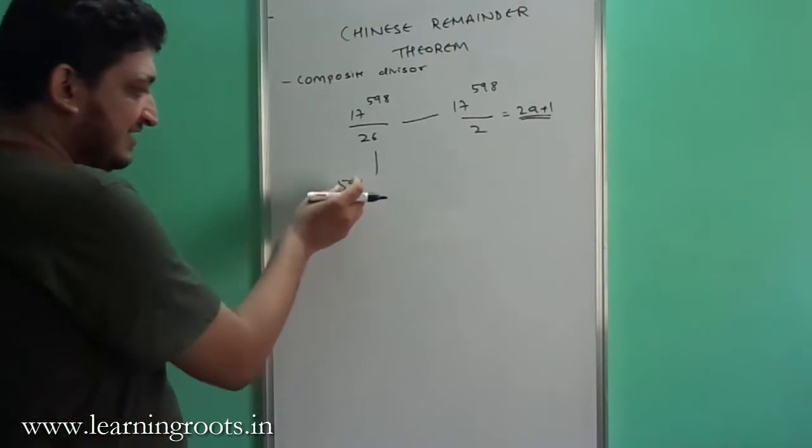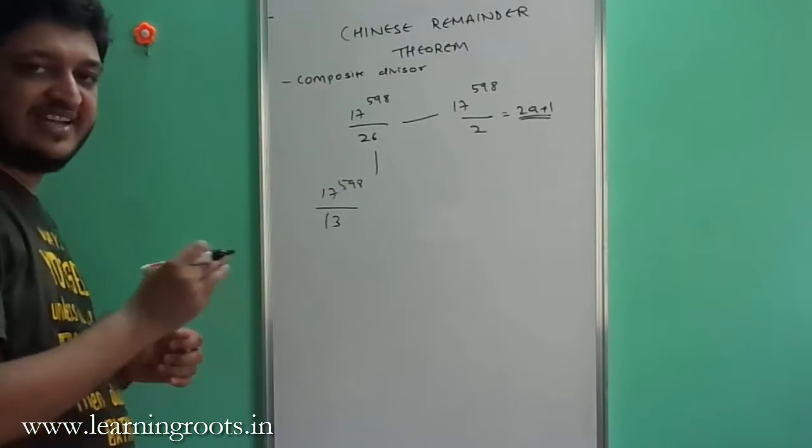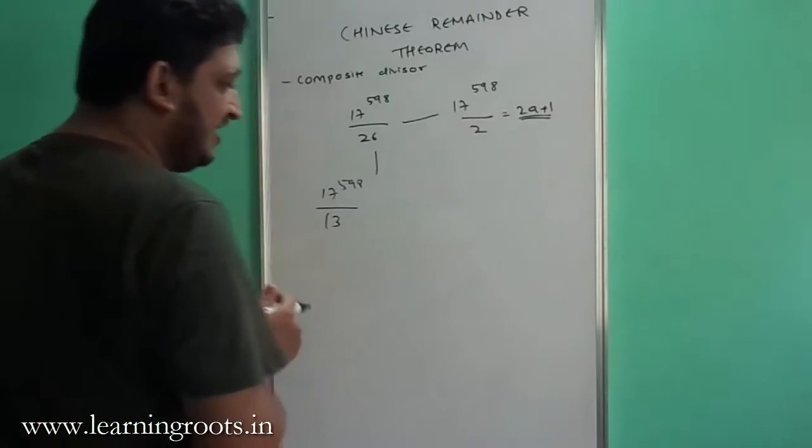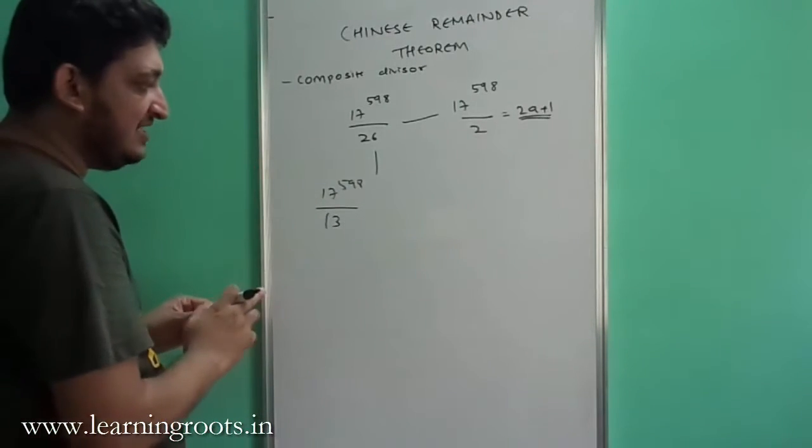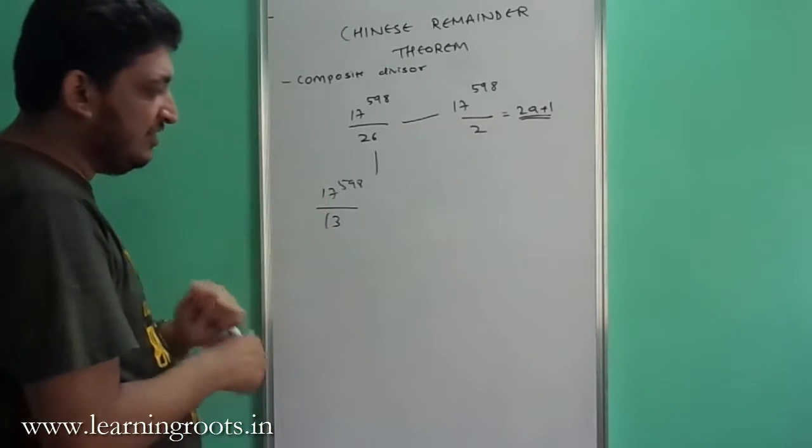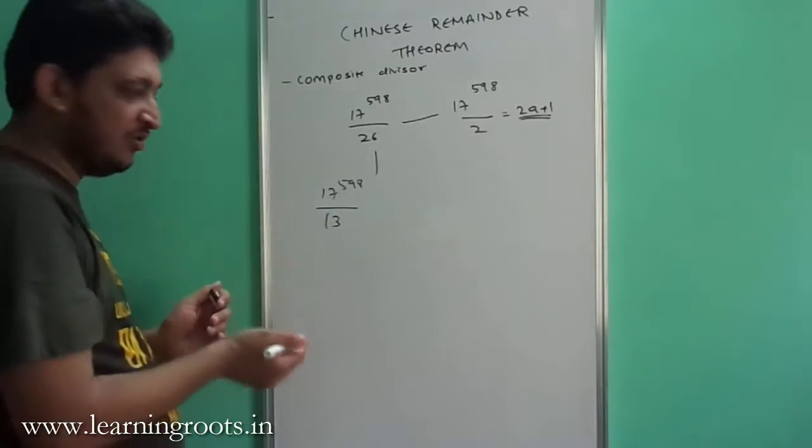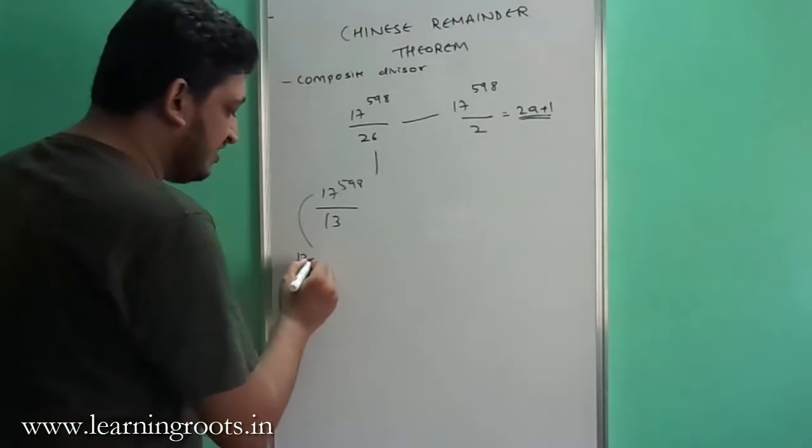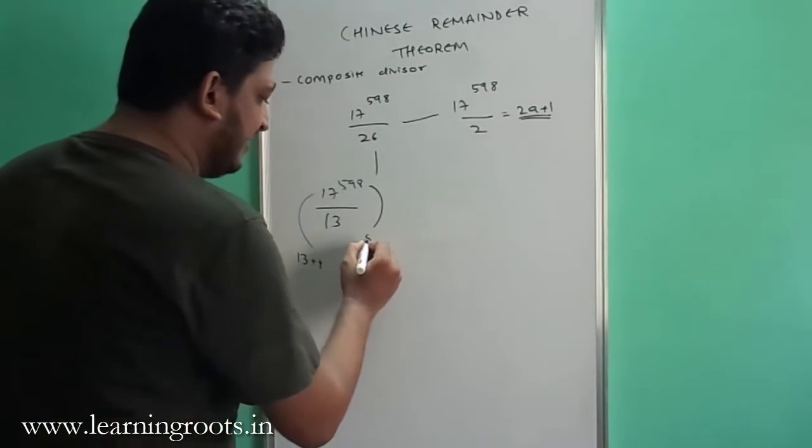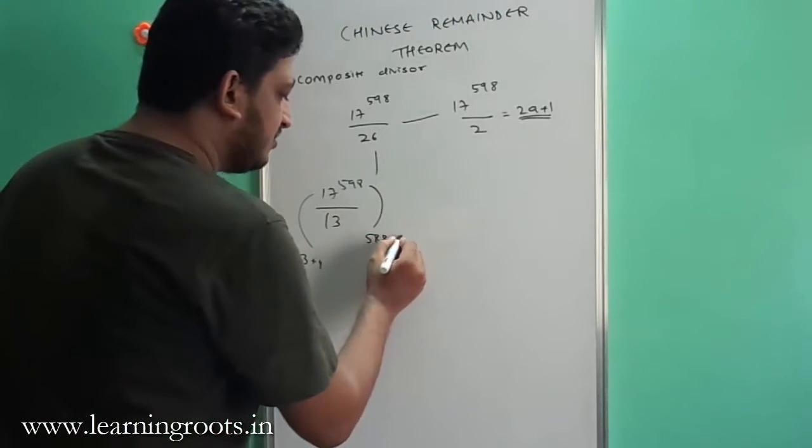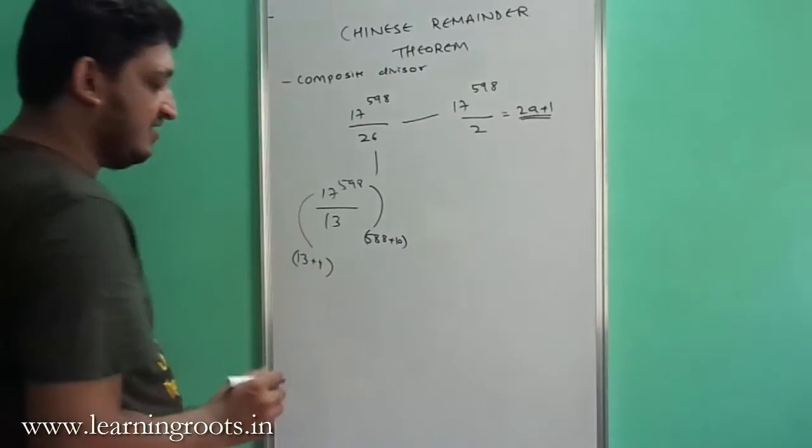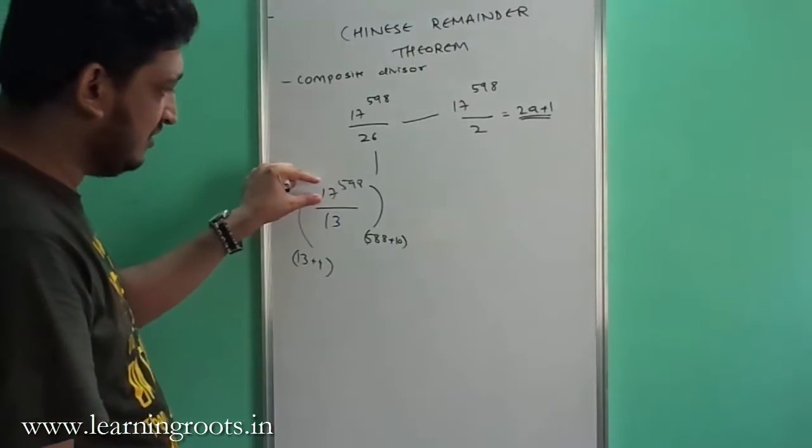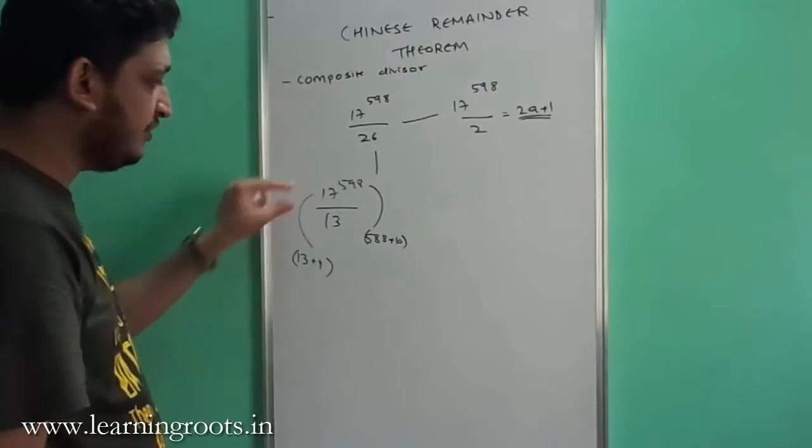Now if you see carefully, 598 is nothing but 588 plus 10. Now 588 is divisible by 12 and so the remaining part is 10. Also, 17 can be split as 13 plus 4. So we will split this as 13 plus 4 and we will split this as 588 plus 10. These two things you have to do right at the start.